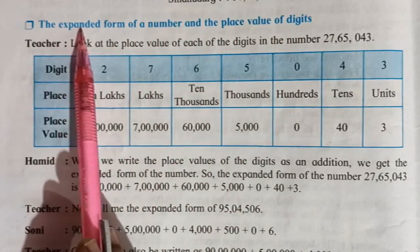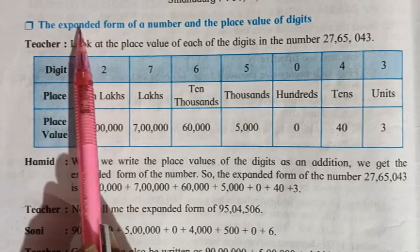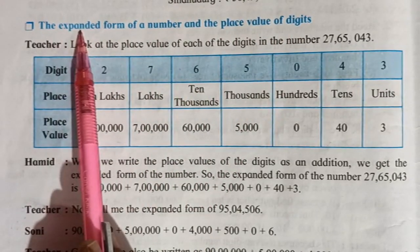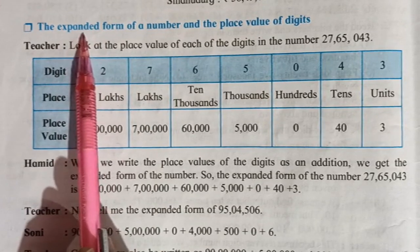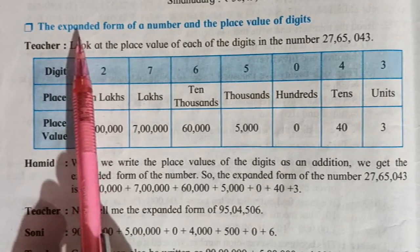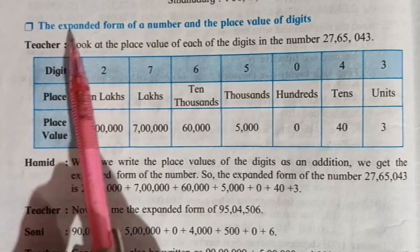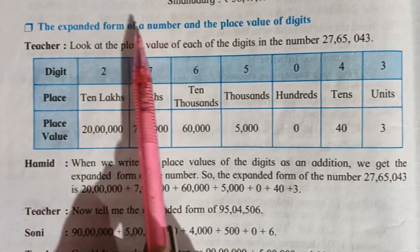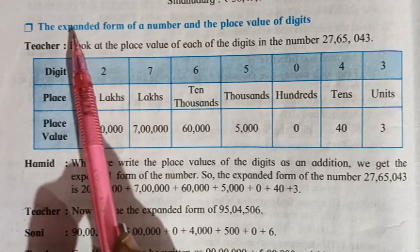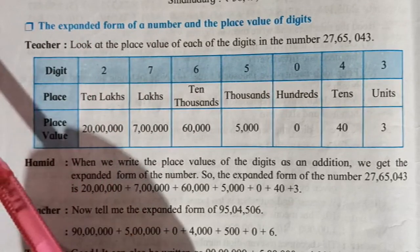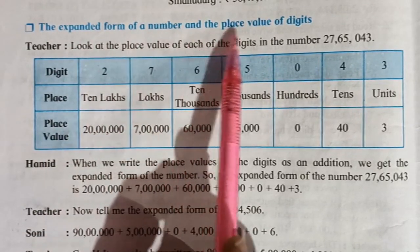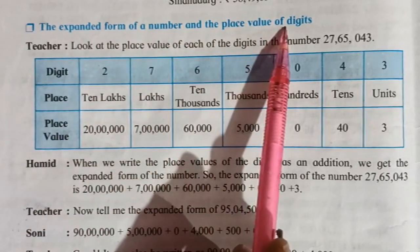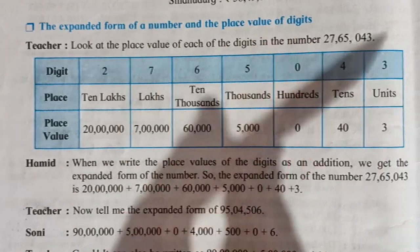What is the expanded form? Expanded means you are expanding the particular number to make it big. The number which is given, you are supposed to expand it — and also find the place value of digits.